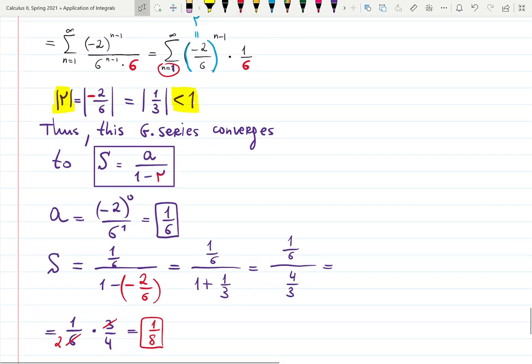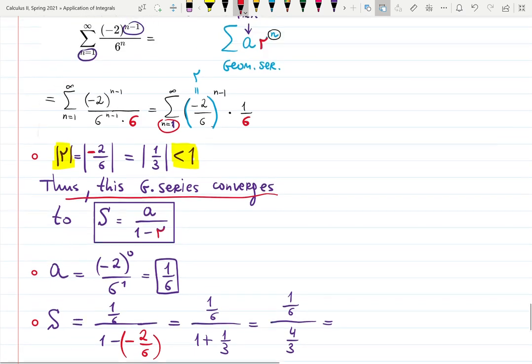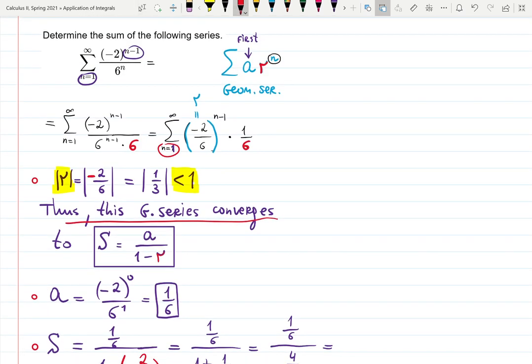And it converges to one-eighth. Let me put important points: r was important, a was important, and the finite sum is important. It converges because it's a geometric series. How to identify that this is a geometric series?